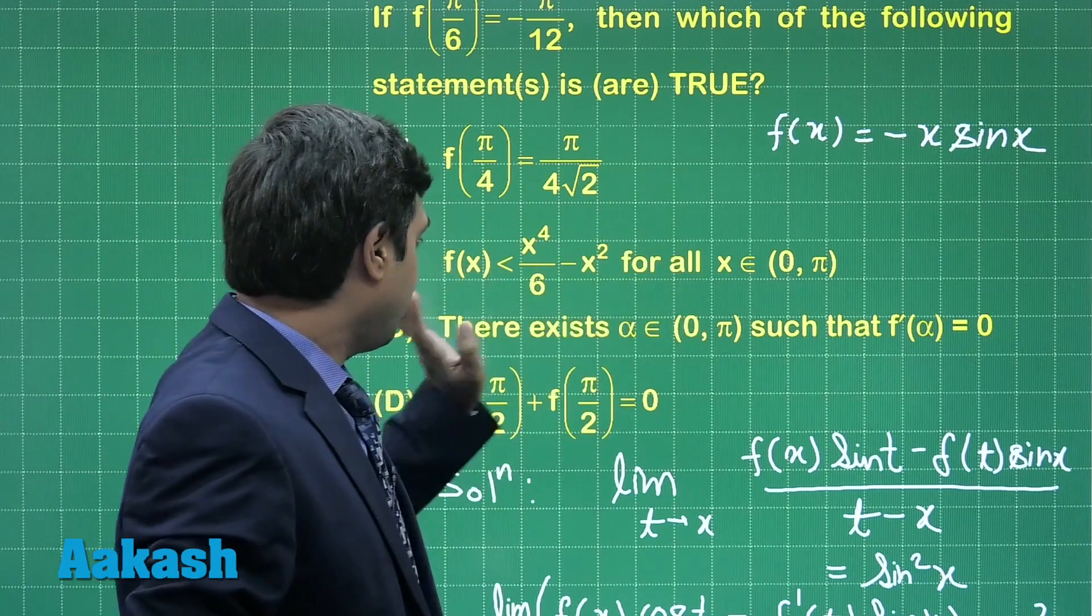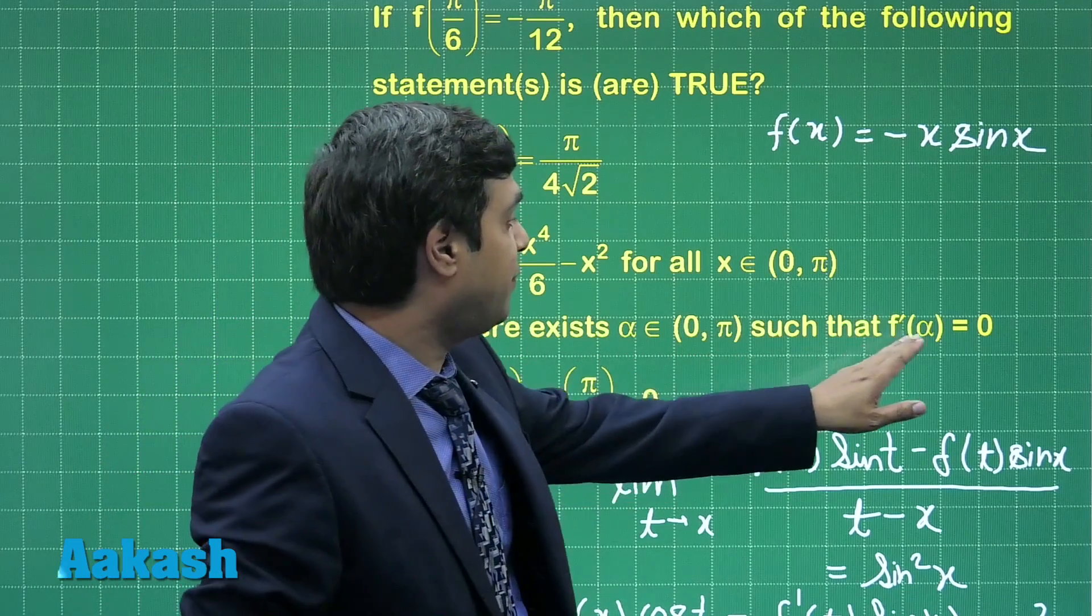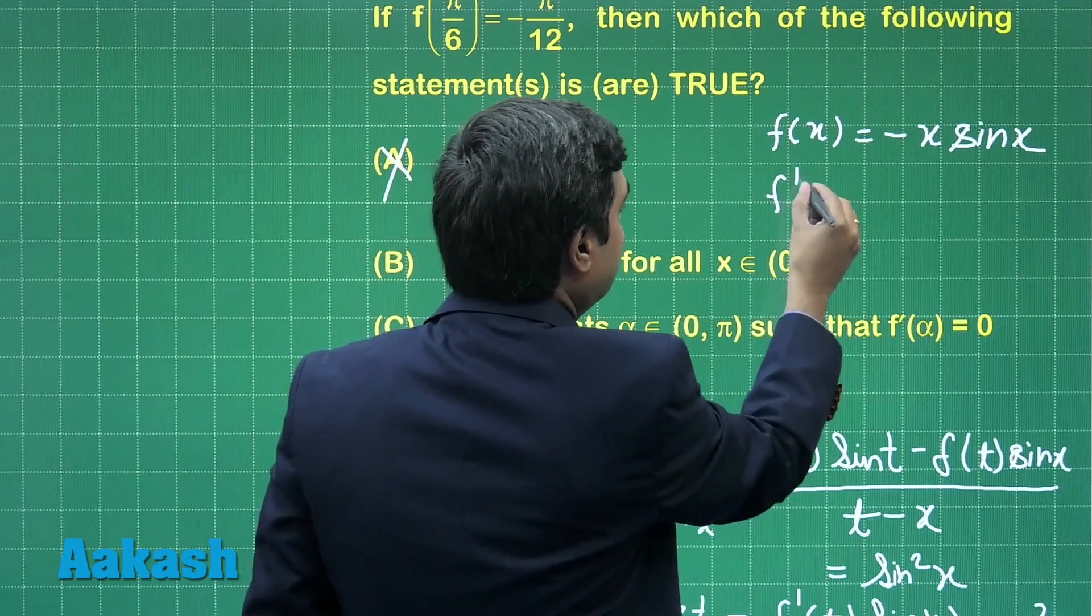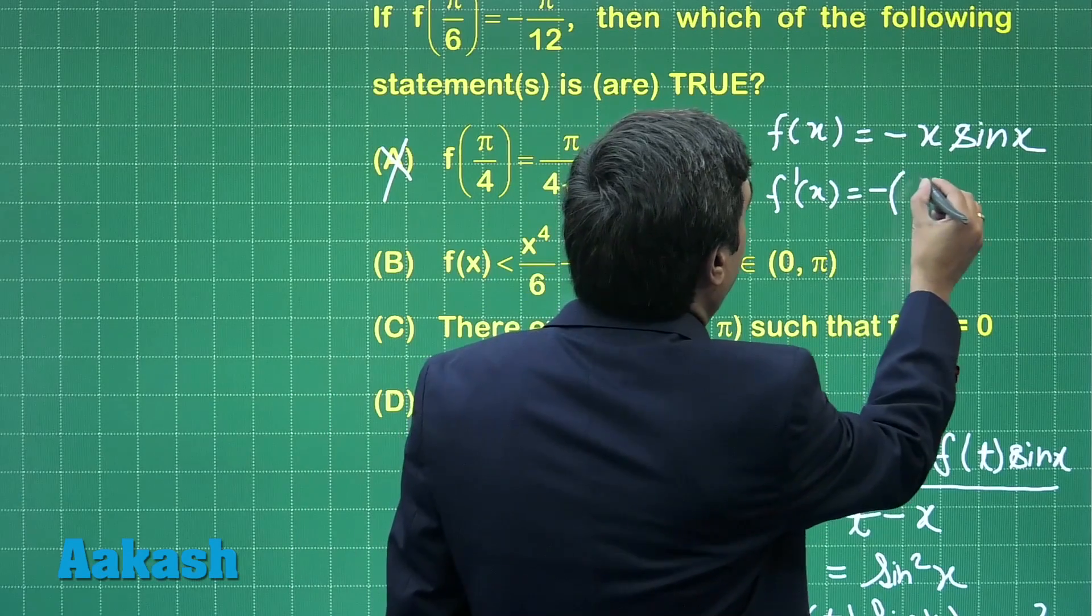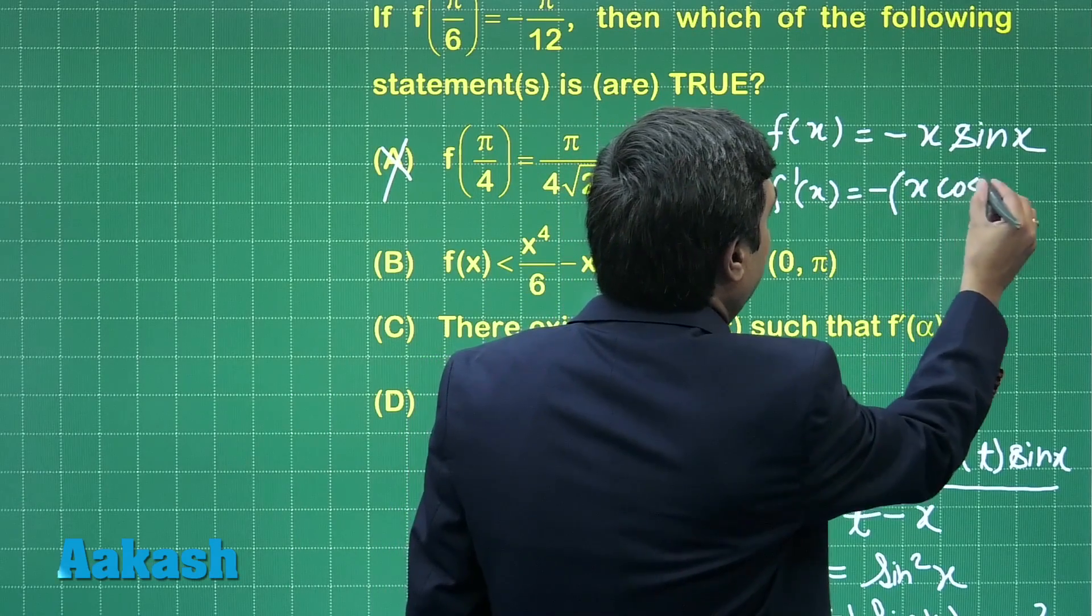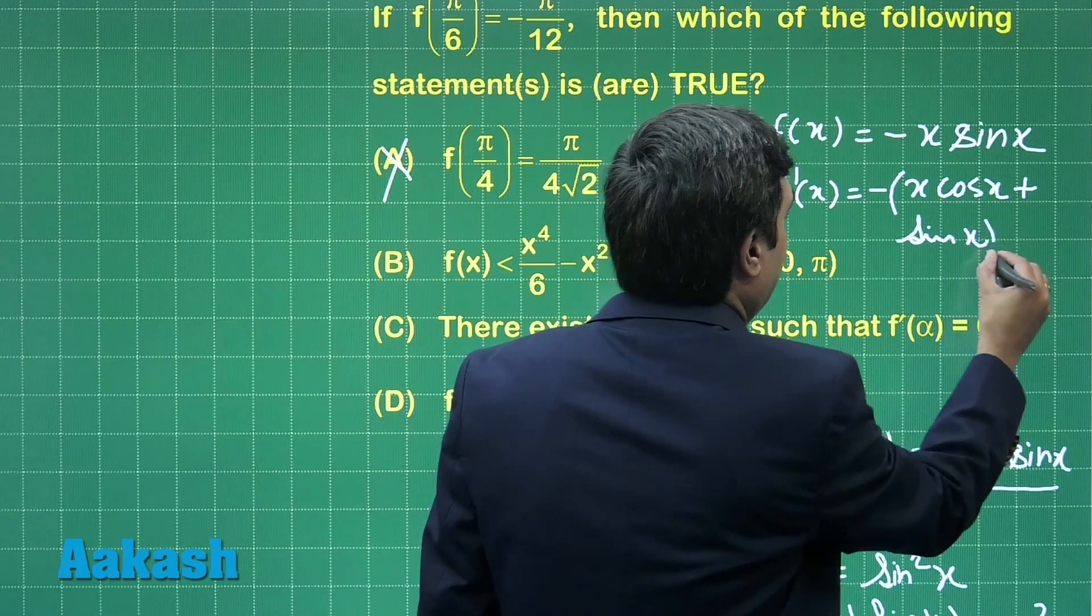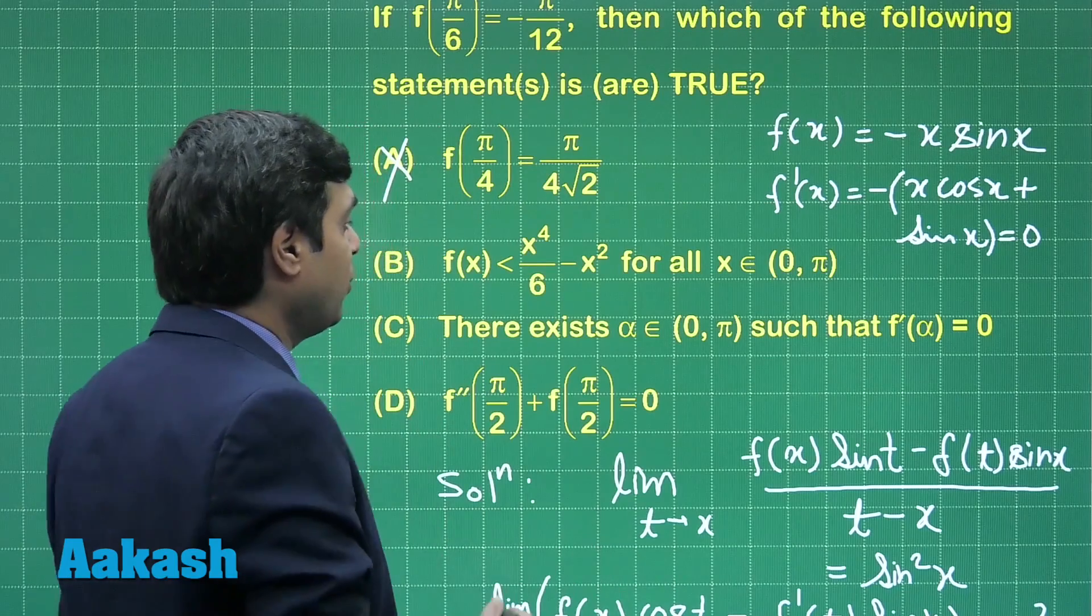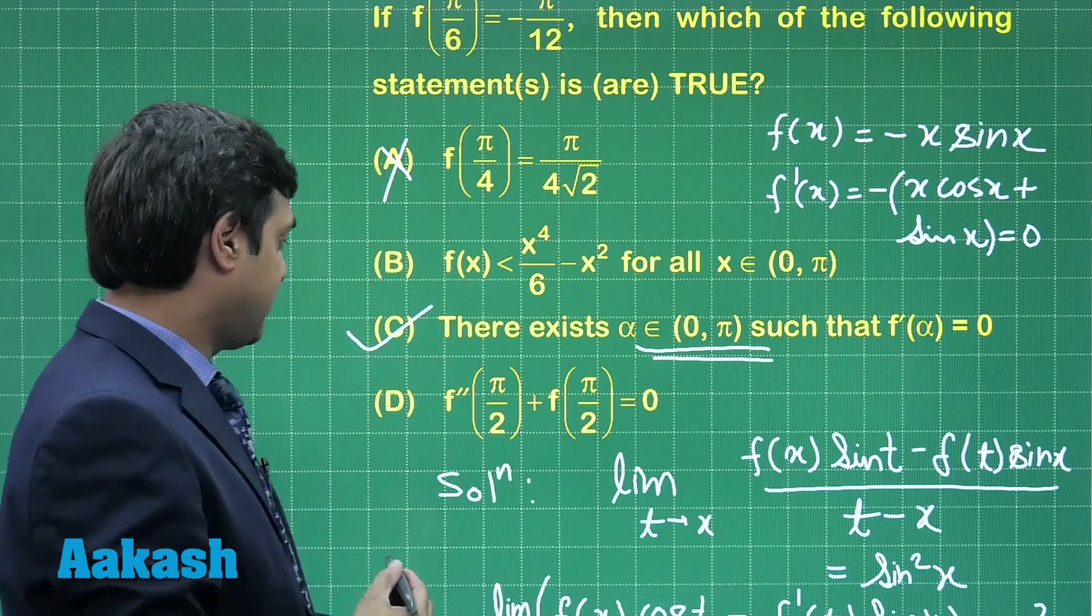Second one is about some inequality. Third one: there exists one α such that f'(α) = 0. Just find out the derivative of this function: f'(x) = -x cos x + sin x. Yes, this can clearly be 0 for some value of x, say α, in the interval (0, π). So this option is correct.